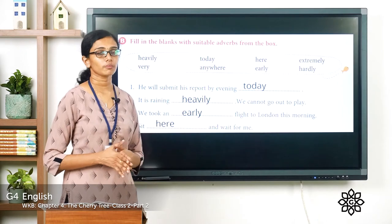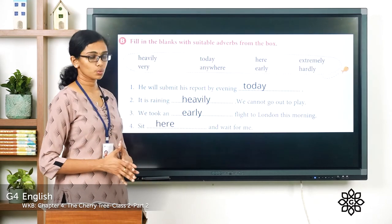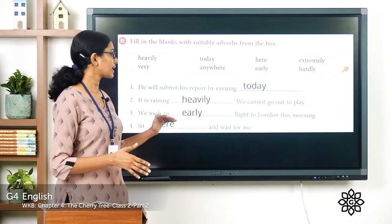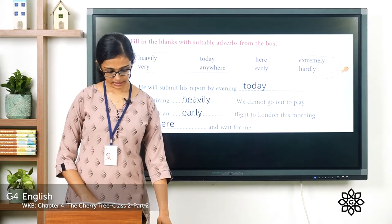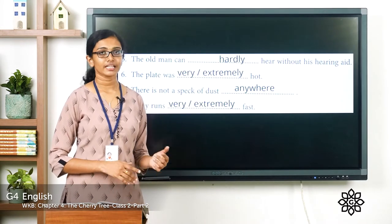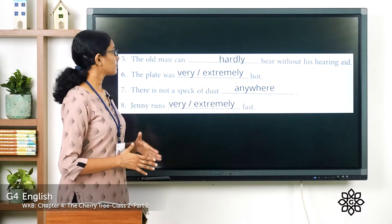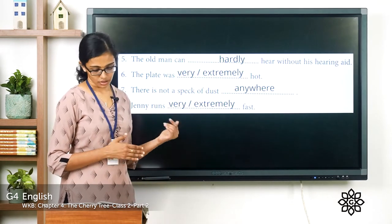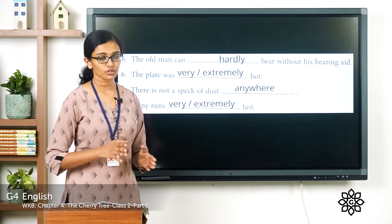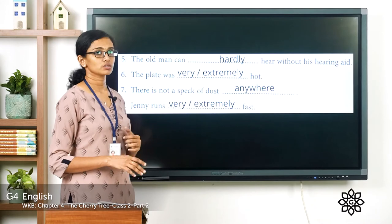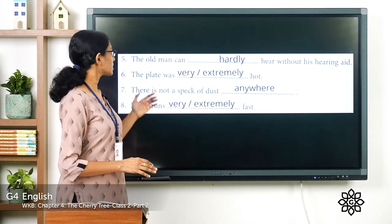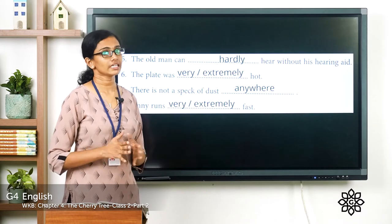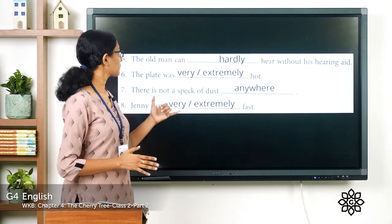Question four: sit here and wait for me — an adverb of place. Question five: the old man can hardly hear without his hearing aid. Question six: you can have two options — you can either write 'very' or 'extremely.' The plate was very hot, or the plate was extremely hot. These adverbs are adverbs of degree — they show the degree of the adjective.